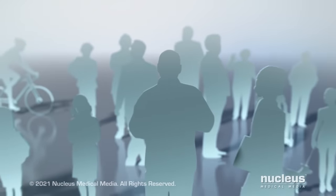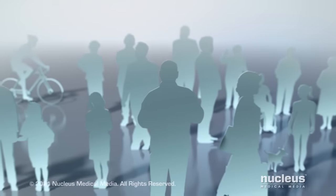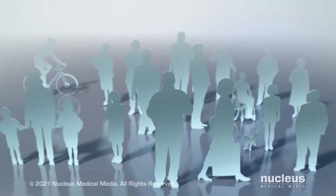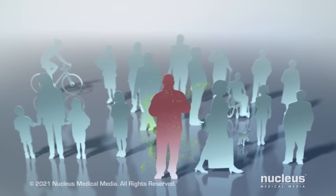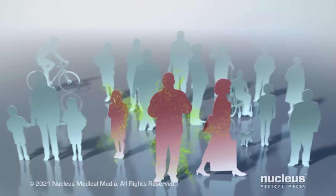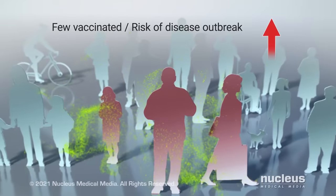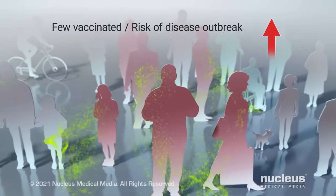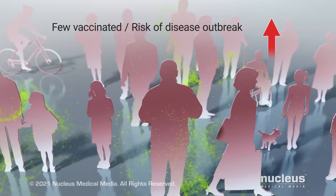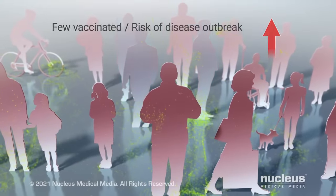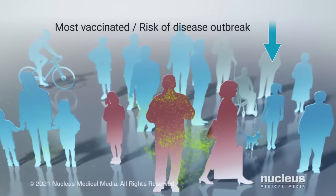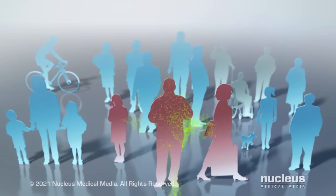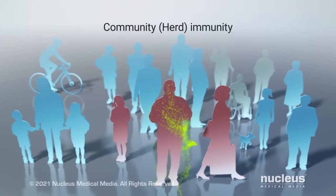It's important to know that vaccines not only protect you, but your community as well. Many diseases that vaccines prevent are spread from person to person. When only a few people in your community are vaccinated, the risk of a disease outbreak is high. But if most people are vaccinated, it's much less likely for a disease to spread. This is called community or herd immunity.